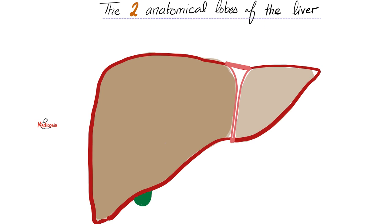Anatomically speaking, the liver has two lobes: the right lobe and the left lobe. As you see here, the right lobe is large and the left lobe is relatively small. The beautiful ligament dividing the liver into right and left lobes is called the falciform ligament. Its function is to connect the liver to the diaphragm and the anterior abdominal wall for support. In embryology, this was the anterior part of the ventral mesogastrium.